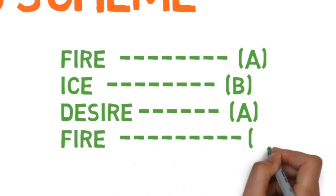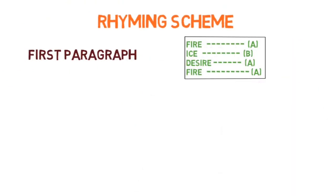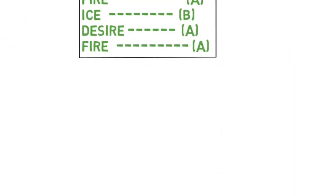So fire, ice, desire, fire. Now fire, desire, fire have the same sound so they will come in category A. And ice is a little different so it will be B.